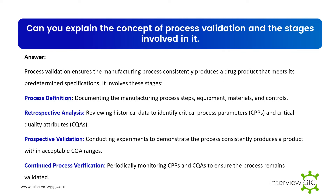Can you explain the concept of process validation and the stages involved in it? Process validation ensures the manufacturing process consistently produces a drug product that meets its predetermined specifications. It involves these stages: process definition, documenting the manufacturing process steps, equipment, materials, and controls; retrospective analysis, reviewing historical data to identify critical process parameters (CPPs) and critical quality attributes (CQAs); prospective validation, conducting experiments to demonstrate the process consistently produces a product within acceptable CQA ranges; and continued process verification, periodically monitoring CPPs and CQAs to ensure the process remains validated.